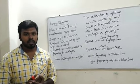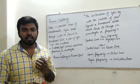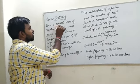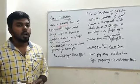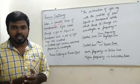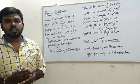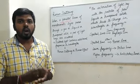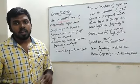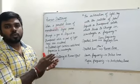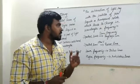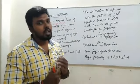Next is Raman scattering. When a parallel beam of monochromatic light — meaning single color light — passes through a gas, liquid, or transparent solid, a part of the light gets scattered such that the scattered light consists of some additional frequencies or wavelengths compared to the incident frequency or wavelength. This is called Raman scattering or Raman's effect. It is defined as the interaction of a light ray with particles of a pure liquid or transparent solid, which leads to a change in wavelength or frequency.